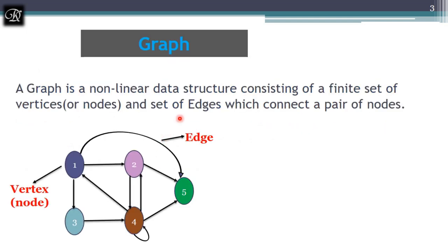Before getting into the traversal and the programming implementation, let's see what a graph is. A graph is a non-linear data structure consisting of a finite set of vertices and a set of edges which connect a pair of nodes. In this example graph, we have vertices one, two, three, four, five — which we can also call nodes — and the connection between them we call an edge.